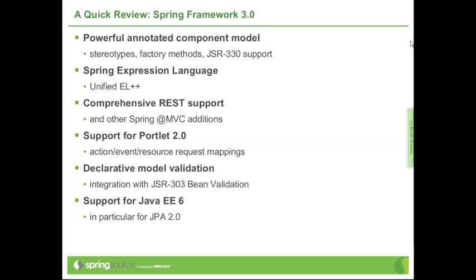In terms of alignment with standardization efforts, Spring 3.0 had a significant step as well. It supports JSR 330, which is dependency injection for Java, and this is a fully compliant implementation of JSR 330 — we do pass the TCK. It's actually the first specification that the Spring Core itself natively supports.